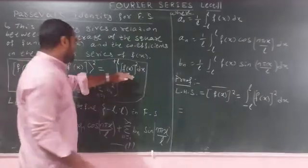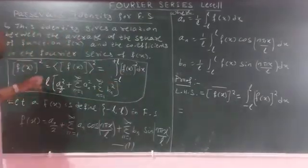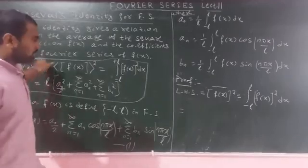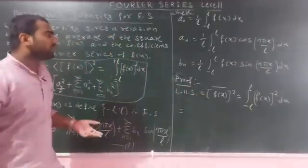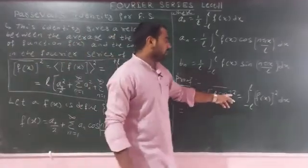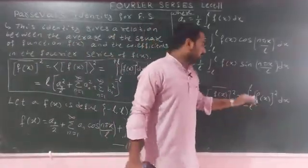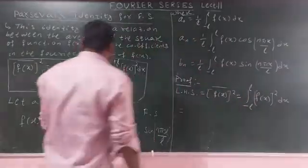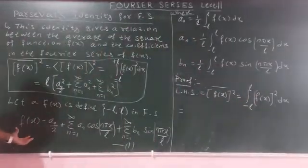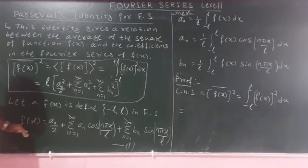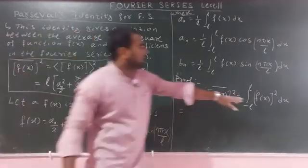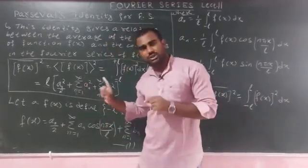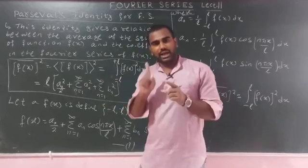To prove Parseval's identity, we start with the left-hand side. The LHS is the average of the square of f(x), written as f(x) bar, where bar means average. Average means the integral of [f(x)]² from minus l to l. We take equation 1, which is f(x) expressed as its Fourier series, and consider f(x) squared on the left side.